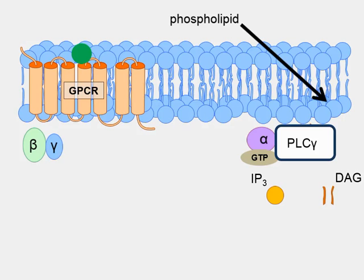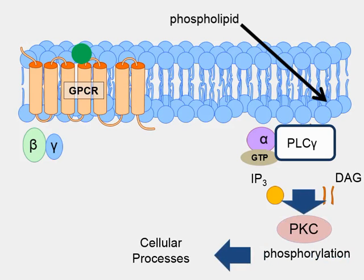We have inositol triphosphate, which is the head part, and diacylglycerol, which is the tail part. Both IP3 and DAG activate a protein called PKC. PKC, or protein kinase C, is a kinase that phosphorylates a number of important proteins that then go on to influence various different cellular processes.